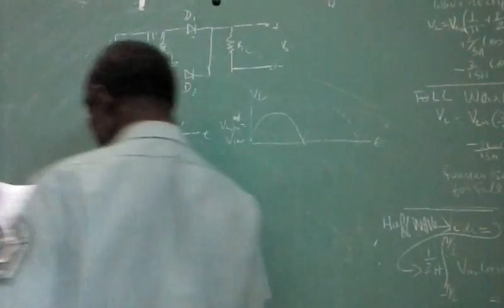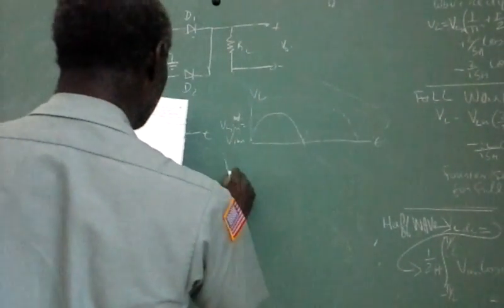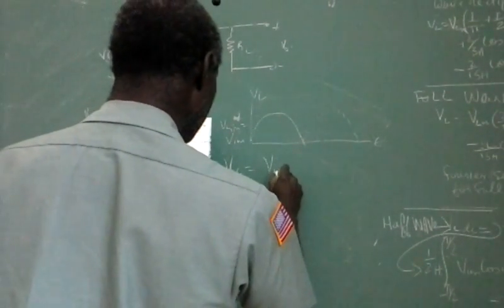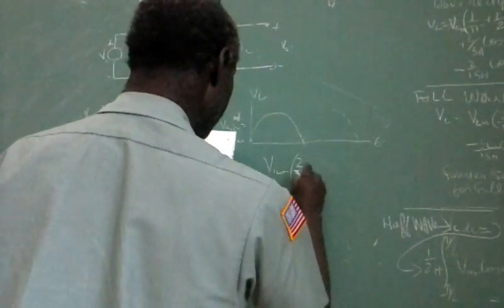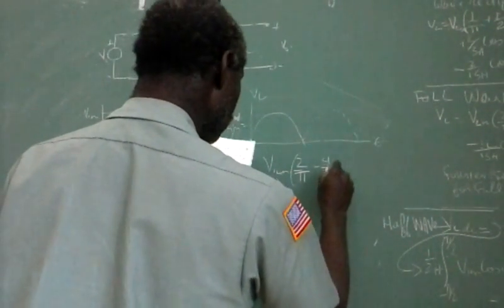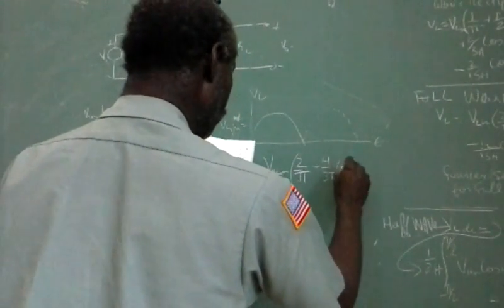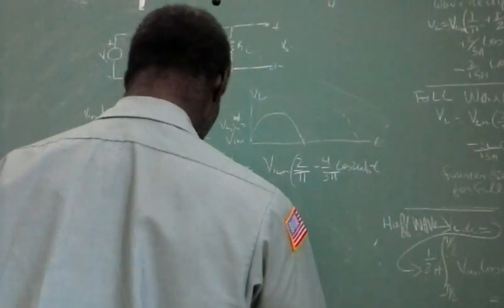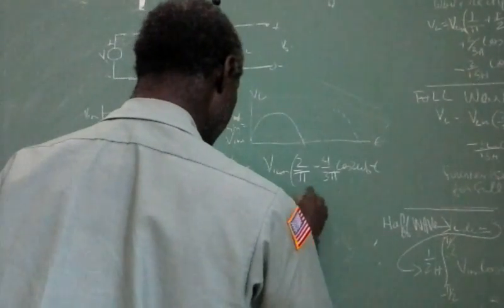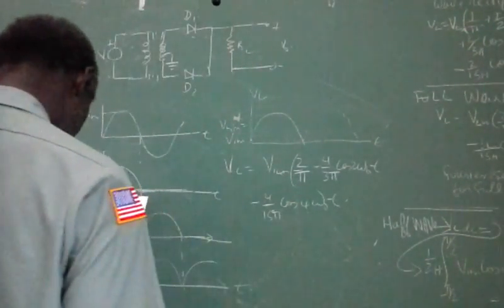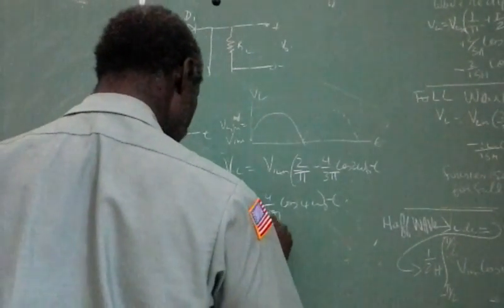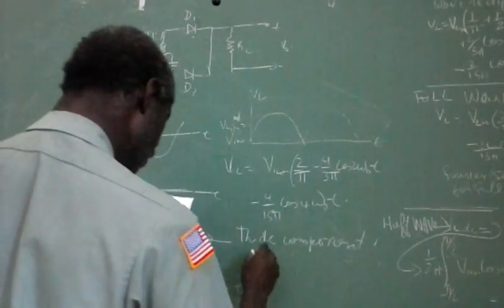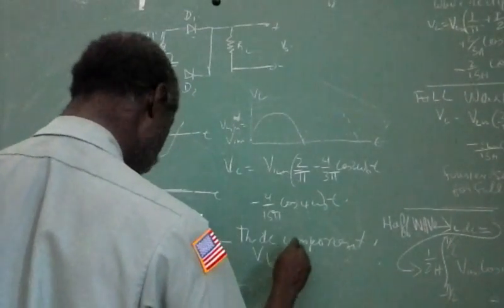The Fourier series expansion of the full-wave rectifier is: VL equals 2Vm over pi, minus 4 over 3-pi cosine 2-omega-zero t, minus 4 over 15-pi cosine 4-omega-zero t. The DC component VDC equals 2Vm over pi.